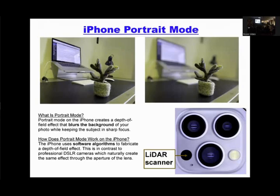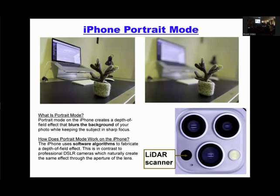iPhone has something called portrait mode, and other phones have something similar. If you take a picture using standard photography mode, everything is in focus because the lens is really small. If you use portrait mode, the background appears out of focus. How? The phone digitally throws the background out of focus through software — but that means the phone knows what the background is. The phone has depth information. Where does it get this?